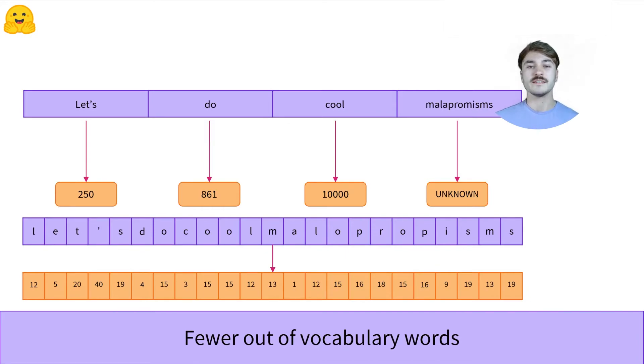However, this algorithm isn't perfect either. Intuitively, characters do not hold as much information individually as a word will hold. For example, 'let's' holds more information than its first letter 'l'.